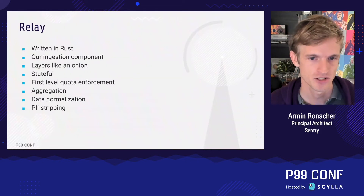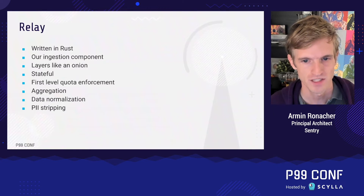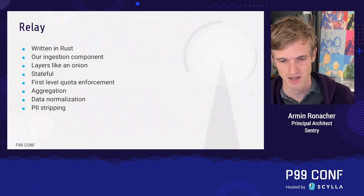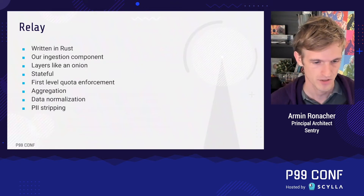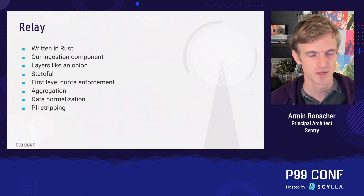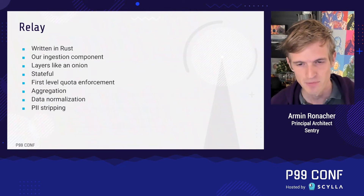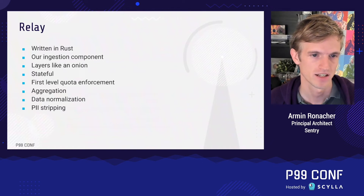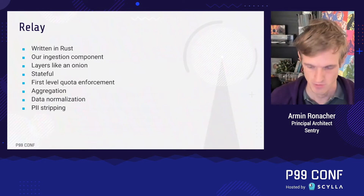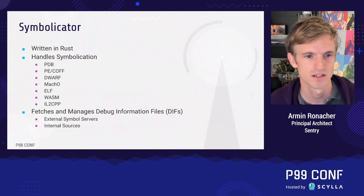Relay is our main ingestion system, written in Rust. It's like an onion — you can stack more and more of them. It's quite stateful: it pulls config from the system behind it, keeps that locally, and does local processing. It's also the first-level quota enforcement system — if a customer sends more data than allocated, we reject it there. It also performs aggregation, normalization, and PII stripping.